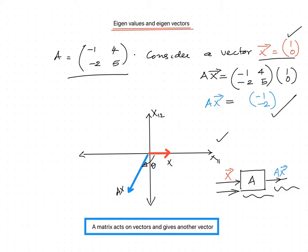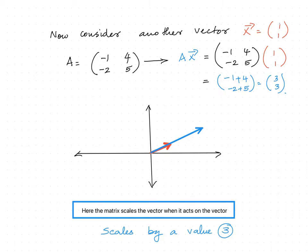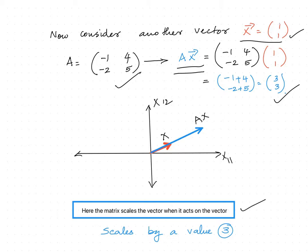In this case, a matrix acts on a vector and gives another vector. Now let us consider another vector x = [1, 1]. If the same matrix acts on this vector, we can see that the resultant Ax is [3, 3]. So in the figure, if x11 and x12 are the axes, then this is x and this will be Ax. This shows that the matrix scales the vector when it acts on it — the matrix scales the vector [1, 1] by 3 units.